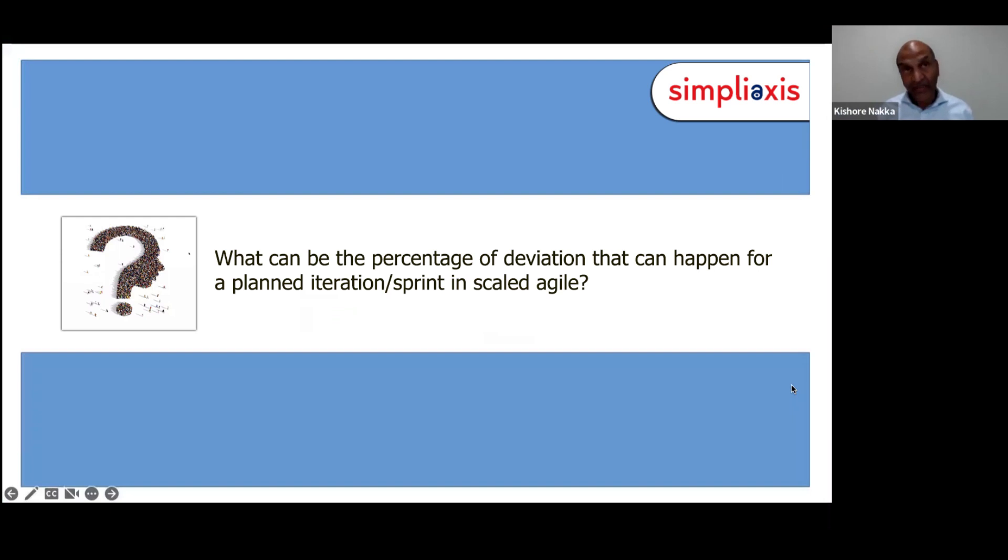But I've seen PI going to 12 weeks, six sprints, or three months. And yes, you can choose a sprint length. The shorter, the better—two weeks. I've seen folks having three-week sprints also.